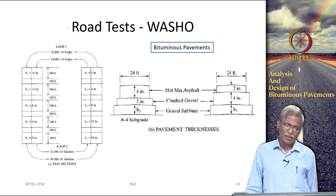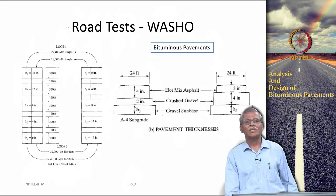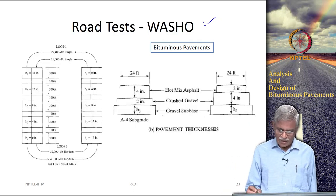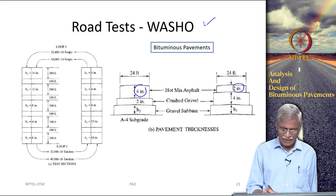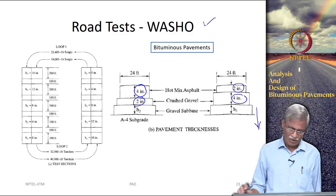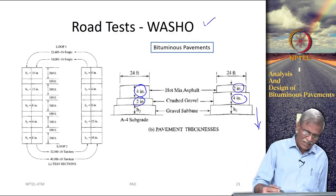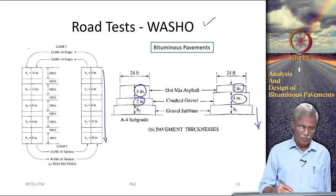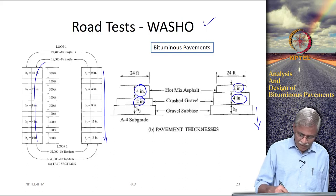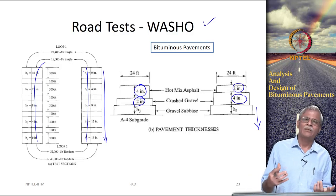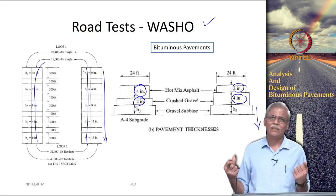The next important road test was constructed by the Washington State Highway officials, what is really called as the WASHO road test. They were looking at the influence of layer thickness - 4 inches, 2 inches, and a variable hot mix asphalt and crushed layer. Many stretches were constructed with different layer thicknesses, and different types of axles went around it. LVDTs were capturing the deformation.